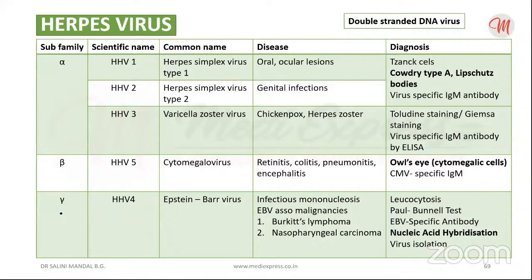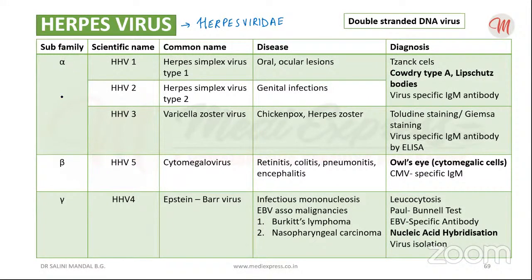Herpesviruses are included in the family Herpesviridae. This family can be divided into three subfamilies: alpha-herpesviridae, beta-herpesviridae, and gamma-herpesviridae.